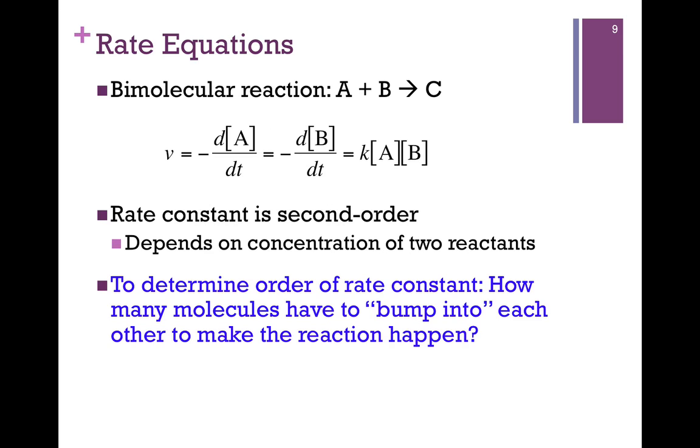But in a bimolecular reaction, we have substances A and B coming together to form C. And so now our velocity expression, it could be determined either by the loss of the concentration of A over time or B, and those would be equivalent because of the stoichiometry of the reaction. One A reacts with one B. And that will be equal to the rate constant, K. And again, that just depends on the rate at which that chemistry occurs. But now the velocity depends on the concentration of two reactants, A and B. And so we say it's a second-order rate constant. Just a simple rule of thumb to help you determine the order of a rate constant. How many molecules have to bump into each other to make the reaction happen?